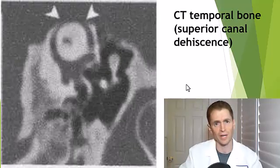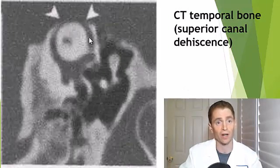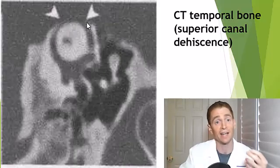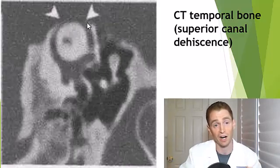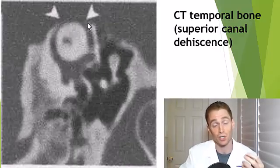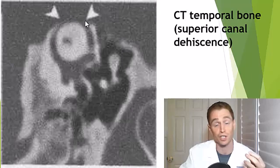It's also possible to do a CAT scan of a specific area. This is a CAT scan of the temporal bone showing a loss of bone or dehiscence near the superior semicircular canal in the middle ear, a condition which can cause vertigo, especially in response to loud sounds — known as Tullio's phenomenon. This can be treated surgically.